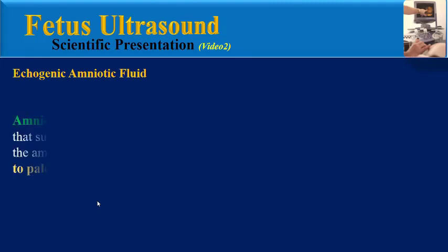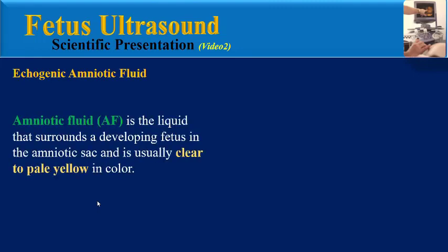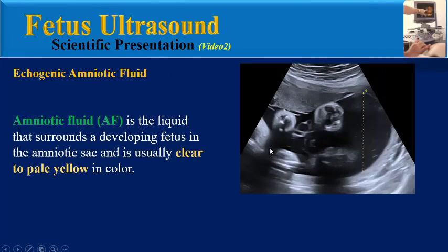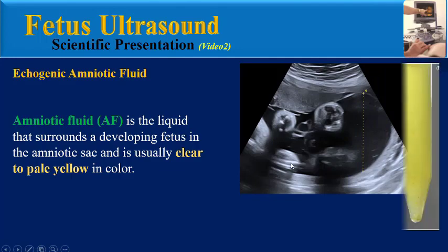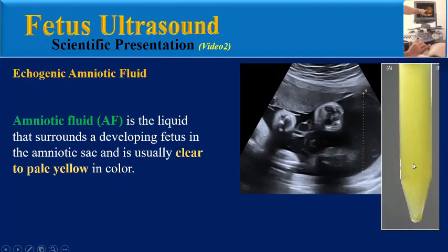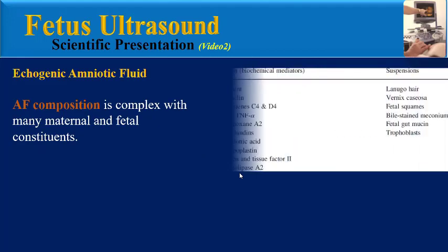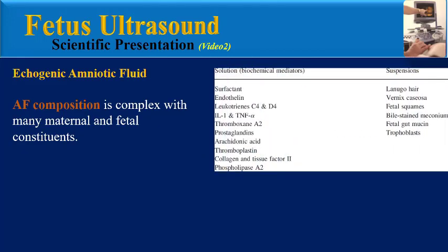Amniotic fluid is the liquid that surrounds a developing fetus in the amniotic sac and is usually clear to pale yellow in color. Amniotic fluid composition is complex with many maternal and fetal constituents.